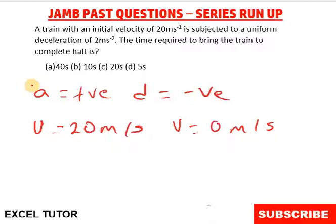We are given our acceleration, which is negative of deceleration, to be minus 2 m per second squared.